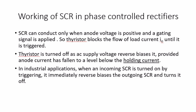As we have shown the thyristor, the thyristor blocks the flow of load current IO until it is triggered. Triggering is the option by which the thyristor switch tends to open — that is the pulse we are giving. The thyristor is turned off as the AC supply voltage is reversed, or the anode current has fallen to a level below the holding current.